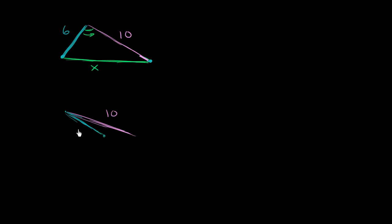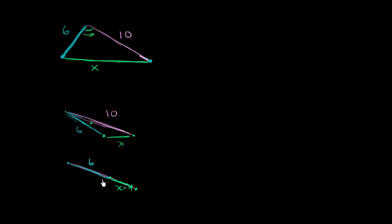Let me draw a progression. The angle is getting smaller and smaller, x is getting smaller and smaller, until we get a degenerate triangle. In the degenerate case, you have the side of length 10 and the angle is essentially 0, so the side of length 6 lies along it. The distance between the two endpoints is x, and we know that 6 plus x equals 10, so x equals 4. If you want this to be a real triangle, x has to be greater than 4.